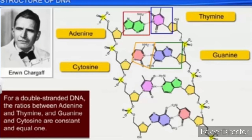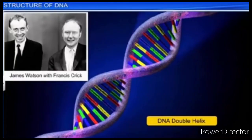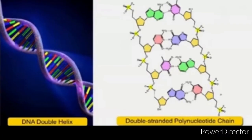The double helix model of DNA was proposed by James D. Watson and Francis Crick. It has the following features. First: the Watson and Crick model of DNA consists of two polynucleotide chains; hence it is called double-stranded. Second: the two chains have anti-parallel polarity, meaning one strand has polarity 5' to 3' and the other strand has polarity 3' to 5'.